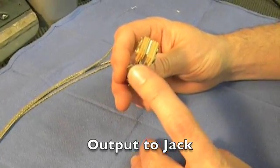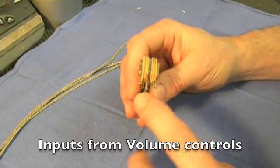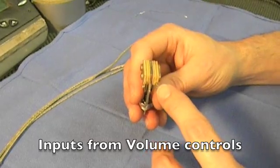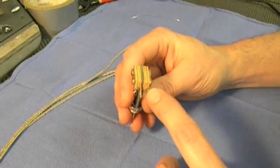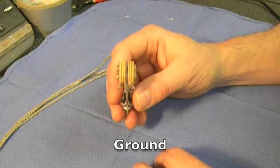That's the output, and when we attach a wire there, that goes to the jack. The other side has two outside legs. Those are the inputs to the switch that come from the volume controls of the guitar, and the middle leg is the ground for the switch.